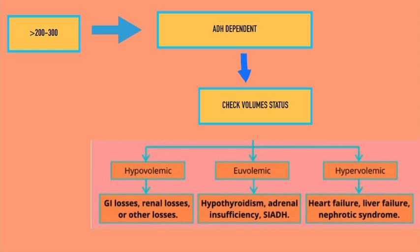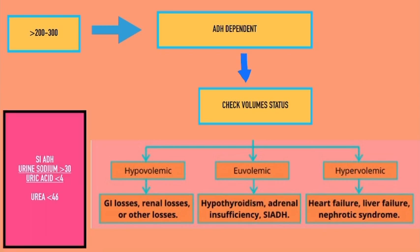To differentiate subtle hypovolemia from euvolemia, we can use urine sodium, blood urea level, and uric acid level. Urine sodium less than 20 indicates hypovolemia. Serum urea less than 46 mg per deciliter and serum uric acid level less than 4 mg per deciliter indicate SIADH — that is syndrome of inappropriate ADH release.